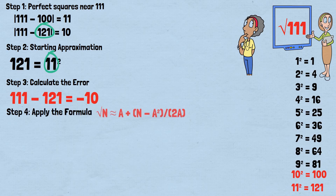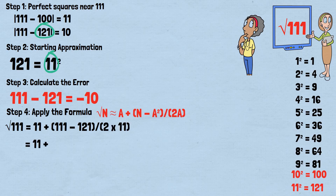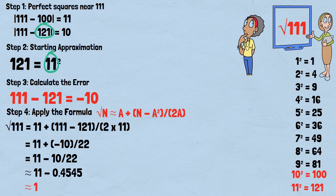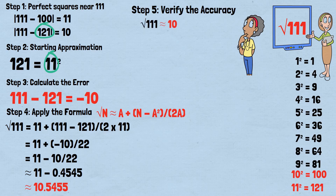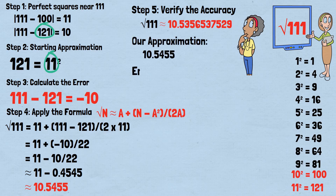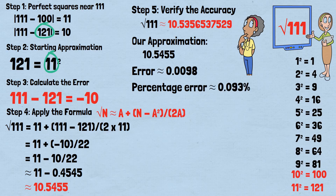Step 3: error — 111 minus 121 equals negative 10. Step 4: apply the formula — √111 ≈ 11 + (−10)/22 = 11 − 0.4545 ≈ 10.5455. Step 5: verify — actual value of √111 is approximately 10.535653752. Our approximation: 10.5455; error approximately 0.0098; percentage error approximately 0.093%. Even for larger numbers, the method maintains excellent accuracy.